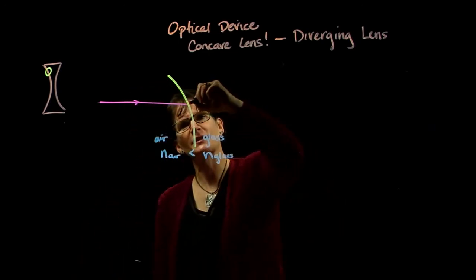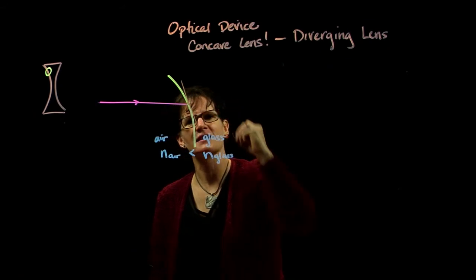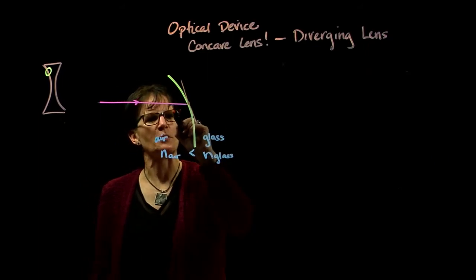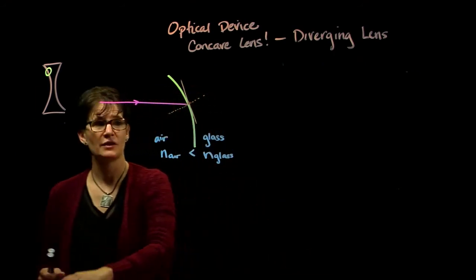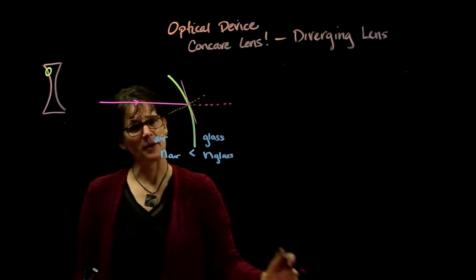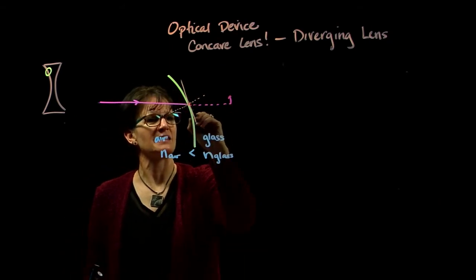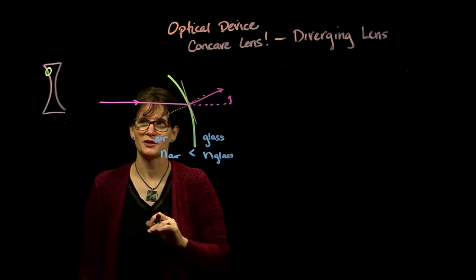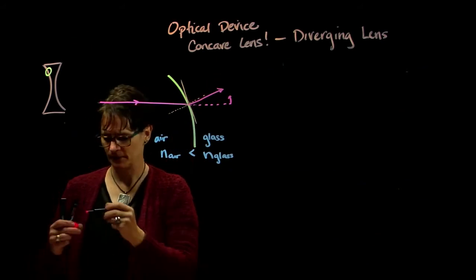We draw the tangent line at the point of incidence on the curved surface, then draw the normal to that tangent. If the ray were not hitting a boundary, it would continue straight. But going from low to high index, it bends towards the normal. We see that as this light ray enters the lens at the top, it's deviated in the upward direction.